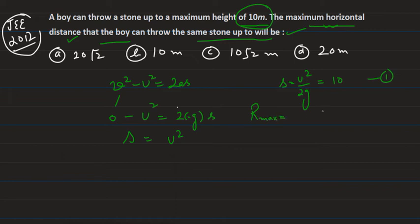R max means when we project the body at theta 45 degrees, the formula is u² sin 2θ / g. So theta is 45 degrees, so u² sin 90 / g. Sin 90 is 1, students. So maximum range is u² / g. As we have written in equation 1, u² / 2g = 10. So obviously u² / g = 20, because u² / 2g is 10. So u² / g is 2 × 10 = 20 meters. So maximum range is 20 meters horizontal distance.